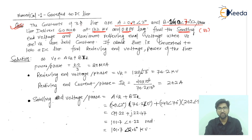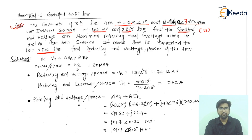We have to find the sending end voltage VS, the maximum receiving end voltage VR maximum, and then if the above line is converted to a DC line, find the receiving end power of the line.